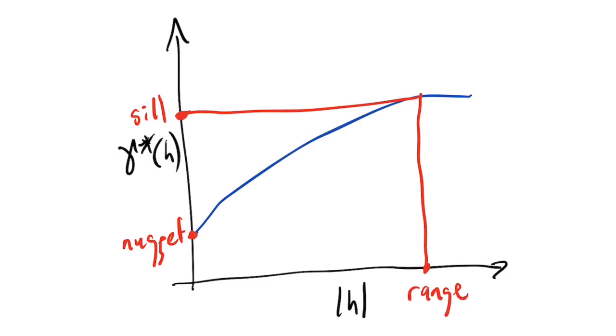Finally, the range is the value of the minimum distance before you reach the sill, after which the dissimilarity tends to flatten out.